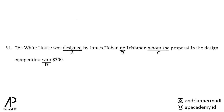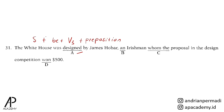Untuk nomor 31, kita lihat pilihan A: designed. Designed dengan penambahan ED memiliki kemungkinan bahwa designed adalah verb 2 atau verb 3. Dalam hal ini, designed adalah verb ketiga atau past participle karena verb 3 muncul setelah be verb, dan setelah verb 3 muncul by sebagai preposition. Ini adalah ciri kalimat pasif di mana be verb diikuti verb 3 lalu muncul preposition. The White House sebagai subject. Oleh karena itu, designed masih benar.